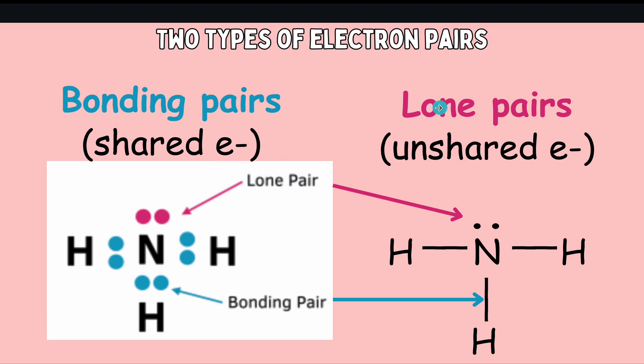Then we also have what we call lone pairs, which are unshared electrons shown in pink. In our ammonia example, there is one lone pair on the nitrogen atom.